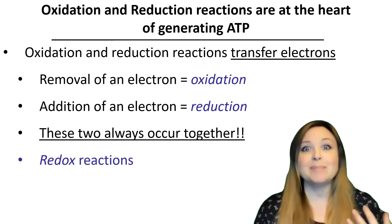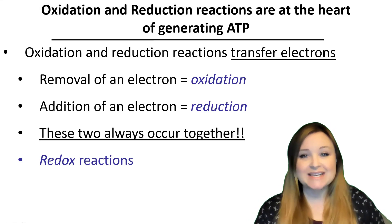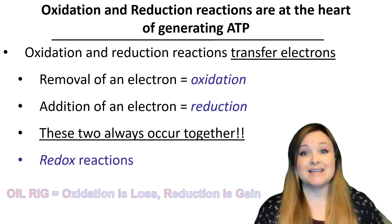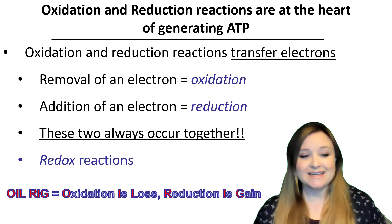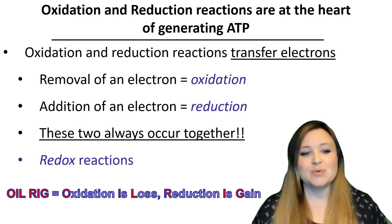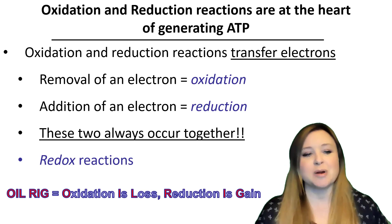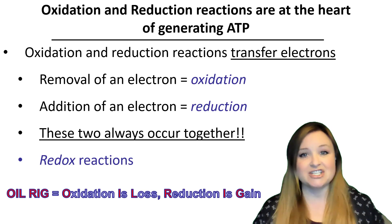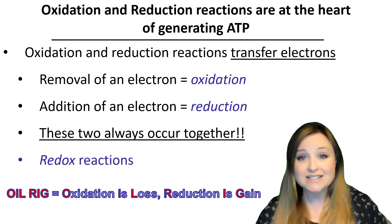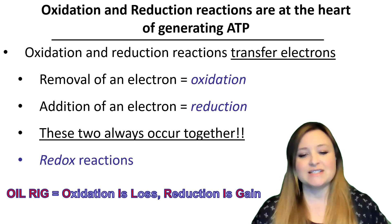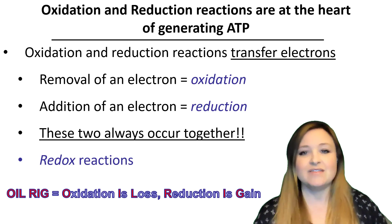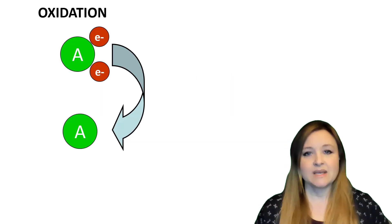The RED part comes from the reduction part of the reduction-oxidation reaction, and the OX comes from the oxidation part. So keep this in mind: reduction and oxidation are just transferring electrons. The molecule that loses the electrons is oxidized, and the molecule that gains those electrons is reduced. One way to remember which is which is by using the mnemonic OIL RIG — oxidation is loss of electrons and reduction is gain of electrons.